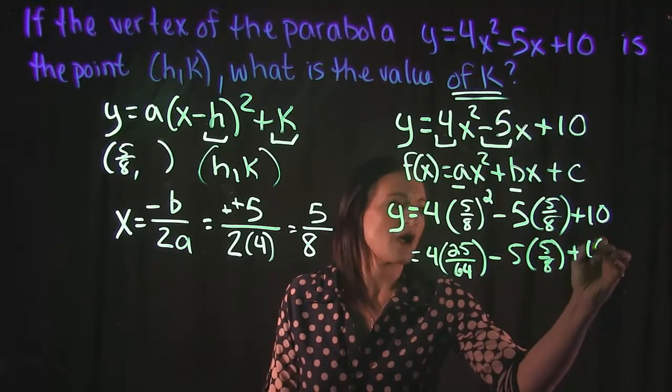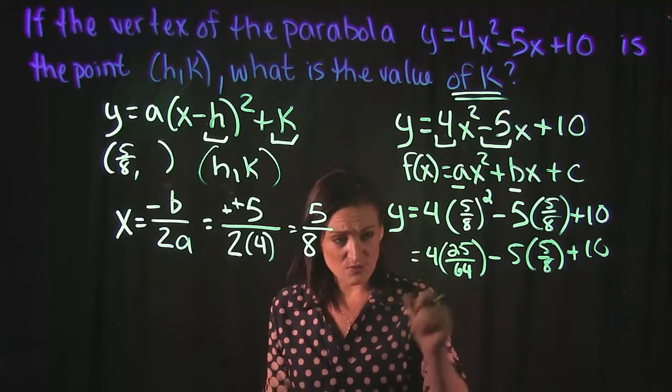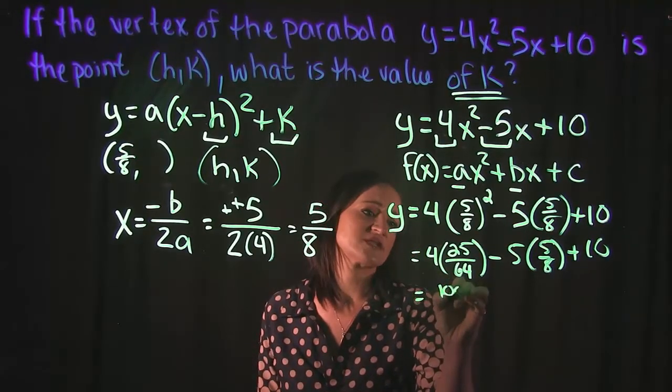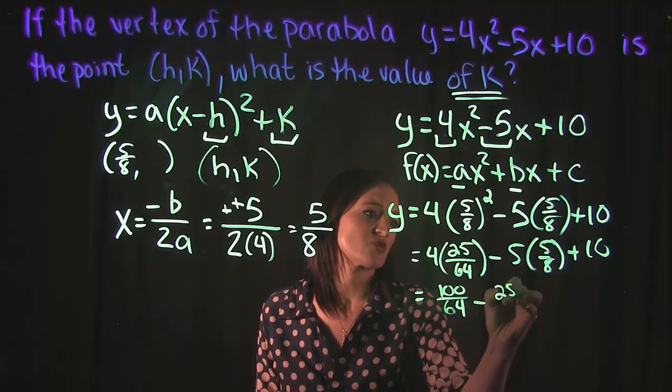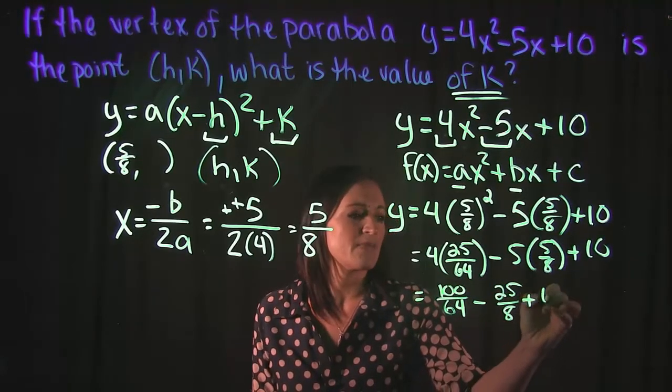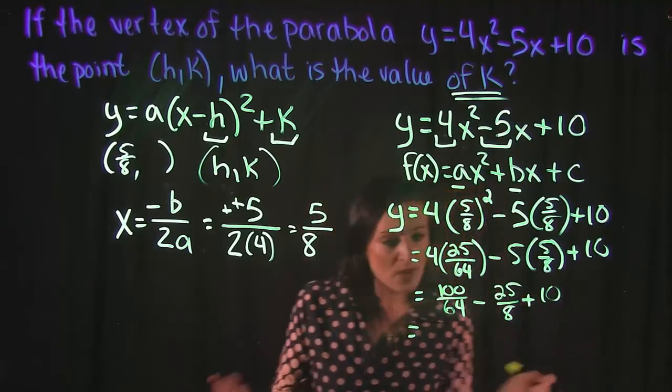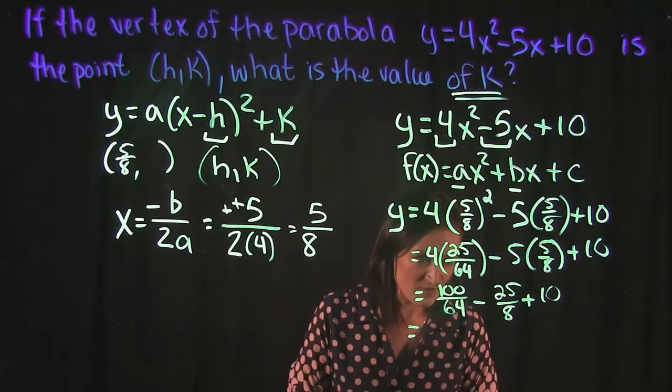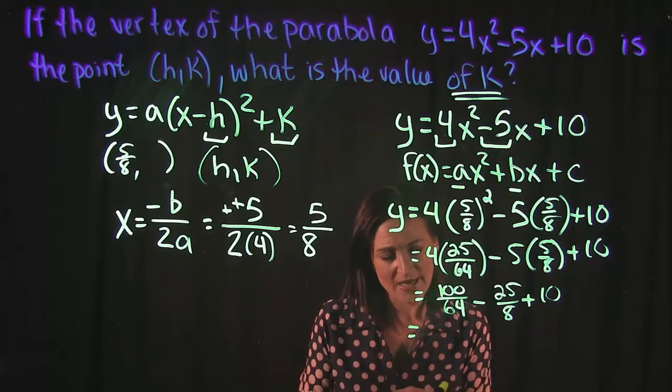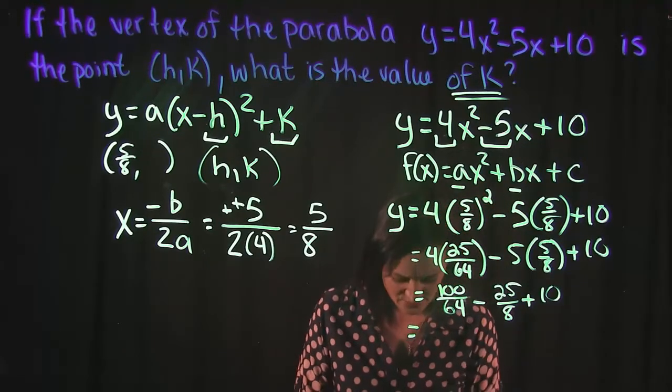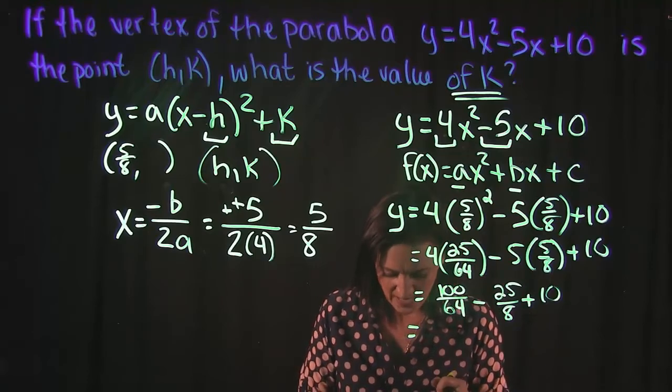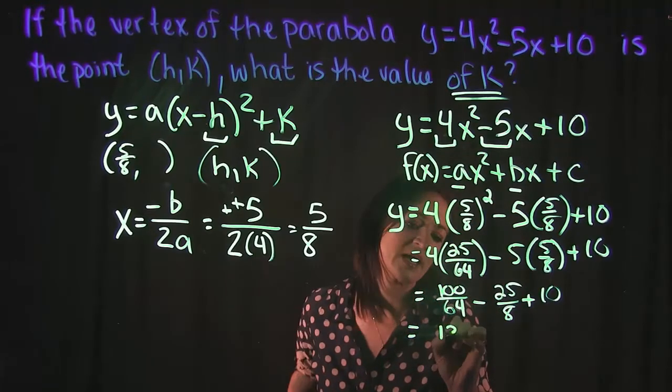Our next step is to do the multiplication. So 4 times 25 is 100/64, minus 5 times 5 is 25/8, plus 10. When we add and subtract all of this together, we get 135/16.